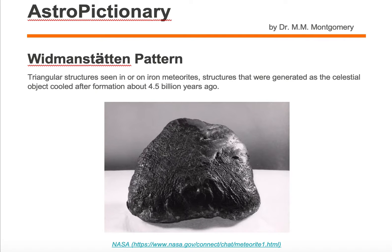The Widmanstätten pattern is a triangular structure seen in or on iron meteorites — structures that were generated as the celestial object cooled after formation about 4.5 billion years ago.